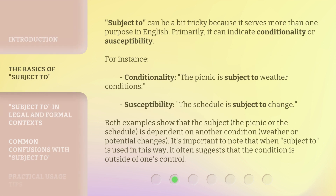'Subject to' can be a bit tricky because it serves more than one purpose in English. Primarily, it can indicate conditionality or susceptibility. For instance — conditionality: 'the picnic is subject to weather conditions'; susceptibility: 'the schedule is subject to change.' Both examples show that the subject — the picnic or the schedule — is dependent on another condition, weather or potential changes. It's important to note that when 'subject to' is used in this way, it often suggests that the condition is outside of one's control.